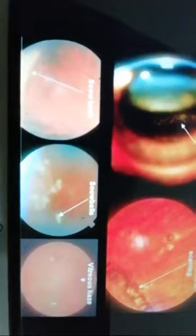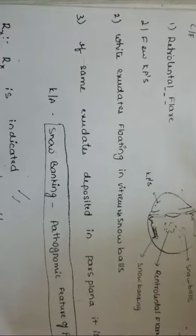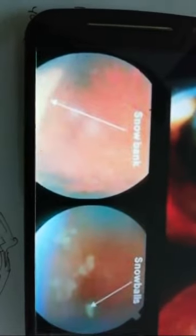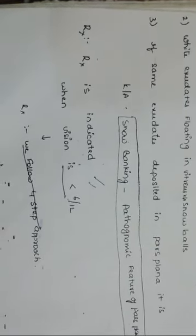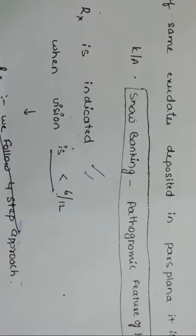If the same exudates deposit on the pars plana, that is known as snow banking. Snow banking is the pathognomonic feature of pars planitis. Treatment is indicated when the vision is less than 6/12 — meaning a normal person can see from a certain distance, but these patients have to come as close as 6 meters to see the same thing, so if vision is less than 6/12, treatment is indicated.